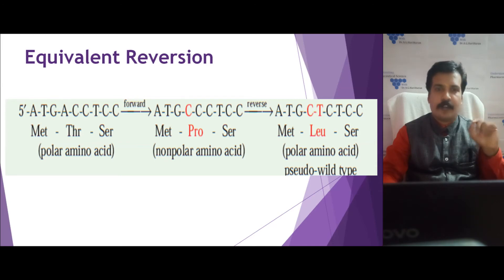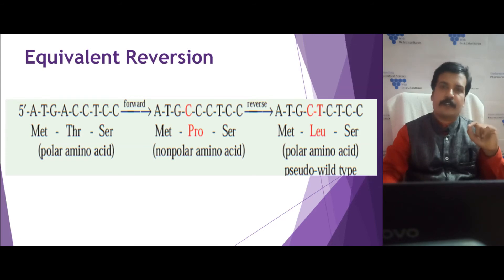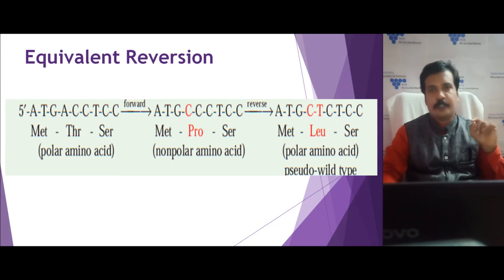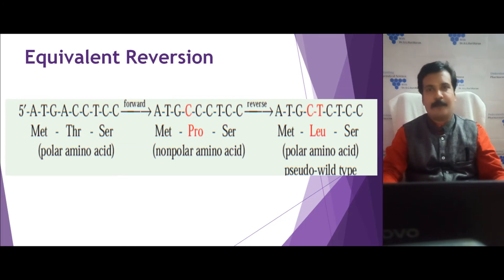In a forward mutation, ACC is converted — adenine is converted to cytosine — so CCC codes for proline, which is a non-polar amino acid. A second reversion mutation then occurs: instead of cytosine reverting to adenine, the adjacent nucleotide cytosine is converted to thymine, leading to CTC, which codes for leucine. Leucine is also a polar amino acid, meaning it has the same characteristics as threonine. Both are polar amino acids with similar characteristics, so the mutant produces similar characteristics to the wild type, but not the actual amino acid — this is called a pseudo wild type. The equivalent reversion can lead to a pseudo wild type.